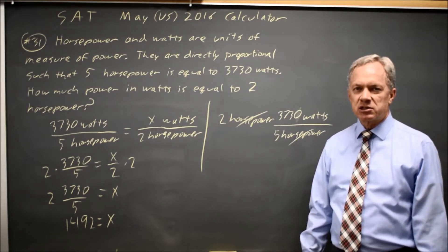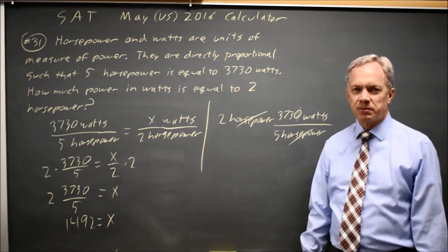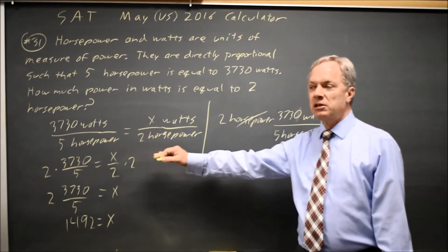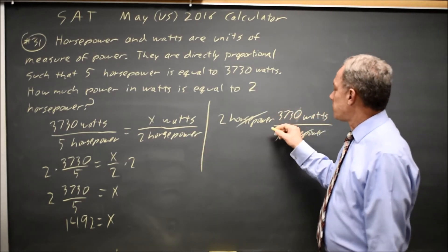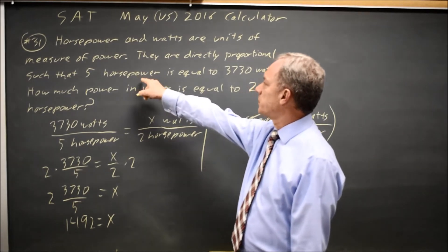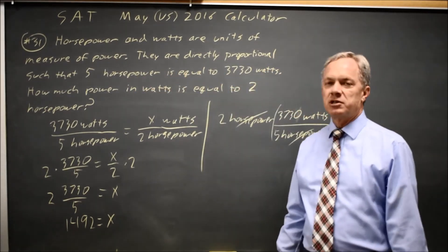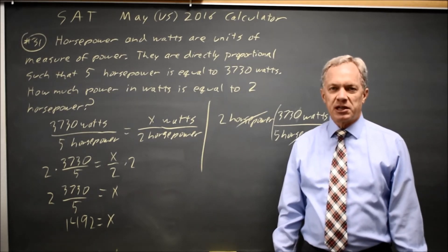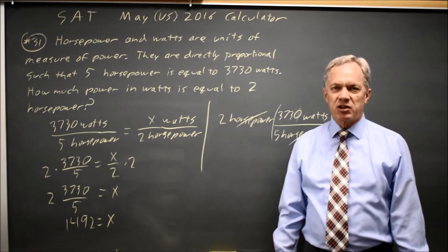These produce equivalent answers, it's just a question of how you want to look at the question. Setting up proportions works very well, but it also works well to multiply by an expression you know is equal to 1. Since they said 5 horsepower is equal to 3730 watts, either number over the other is equal to 1, and you multiply by the 1 that cancels the horsepower you already have. Come back soon for my next math video. With math, there's always more.